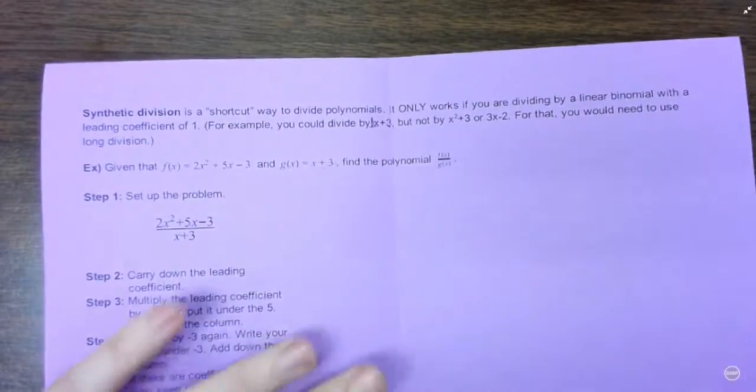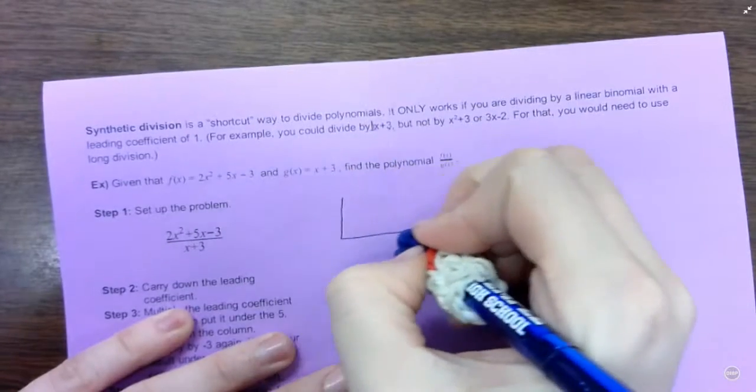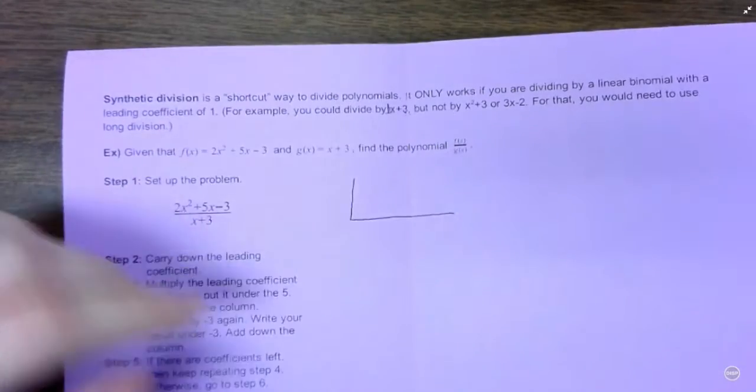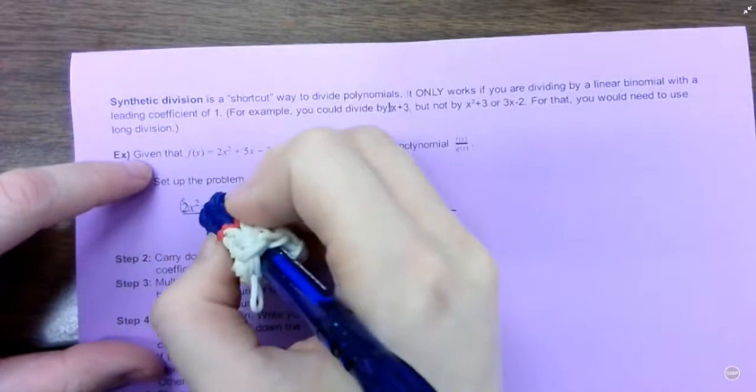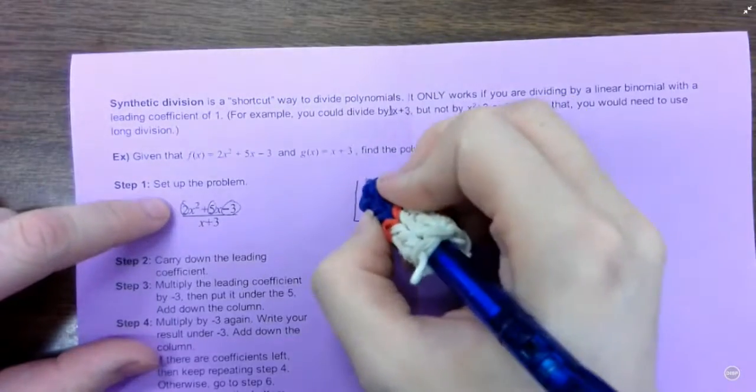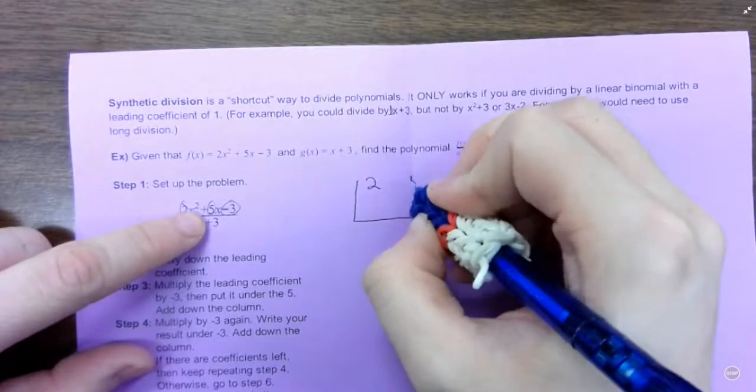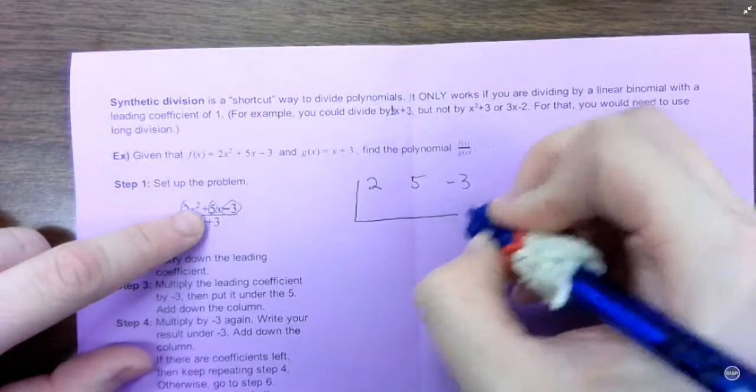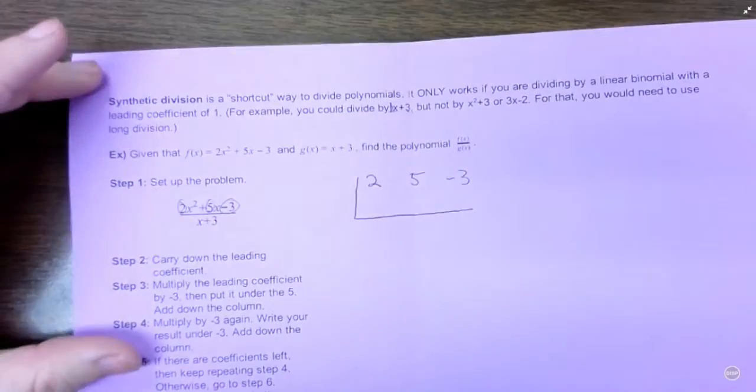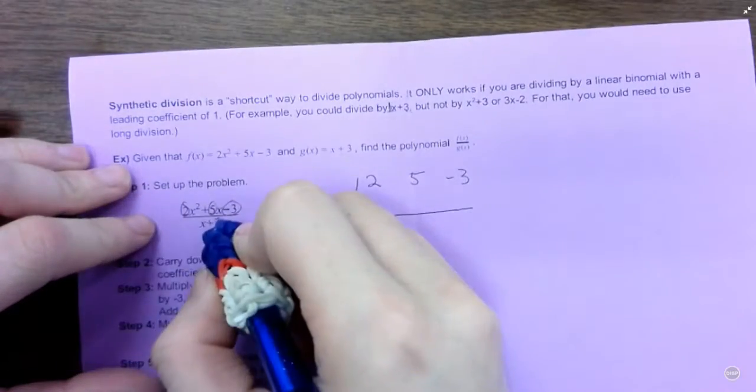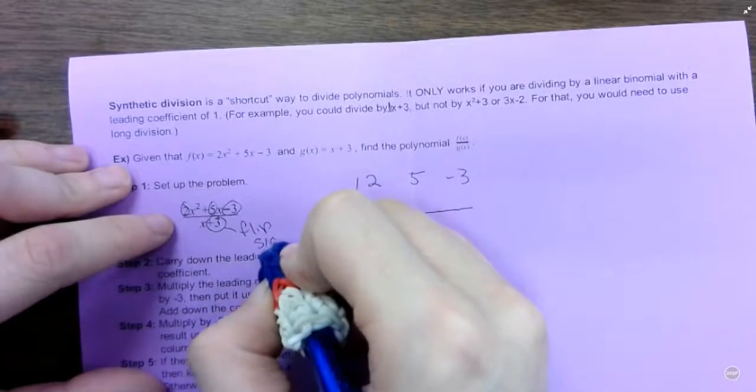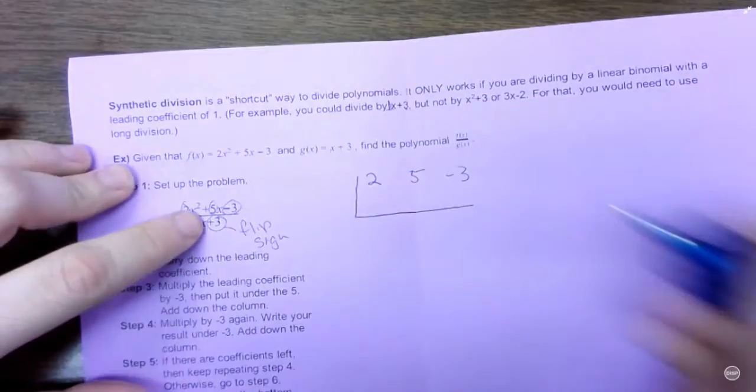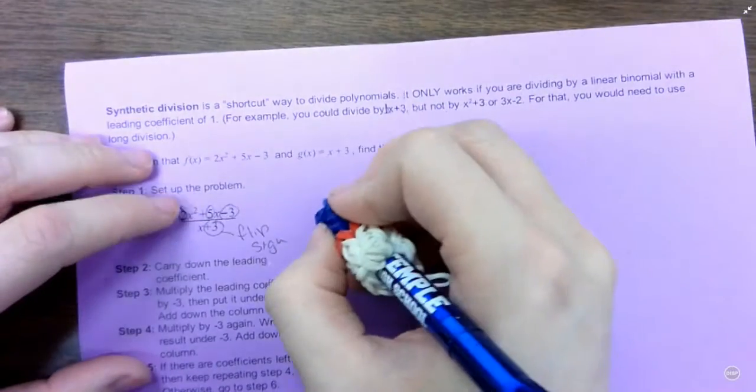So let me show you how to do it. To set up the problem, you're going to kind of like the sign you would draw for a long division, but upside down. And you're just going to take the coefficients in order. So 2x squared, 5x, negative 3. And then this, the divisor, you're going to flip the sign. So I'm going to be, in a way, dividing by negative 3.